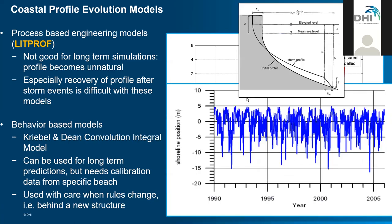That is why behavior-based models are sometimes preferred. The shape of the profile is assumed, and there are rules governing how much the profile retreats or advances if the water level increases or decreases, with a time component involved. This is a very stable model — it has been used over a 15-year period to calculate an envelope of shoreline positions. You can see the shoreline retreating and advancing over time, something that is not easily calculated with LITPROF. It is a simple, efficient, easy to code, and very fast tool.